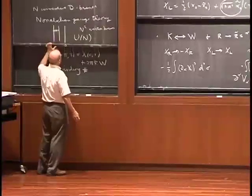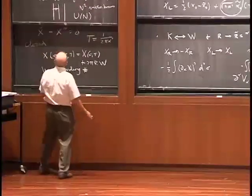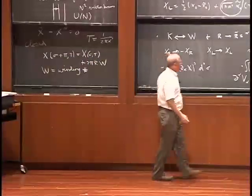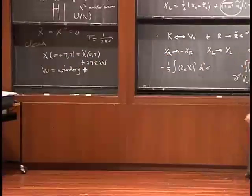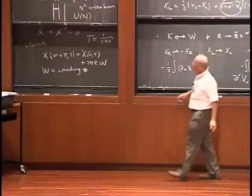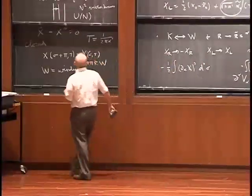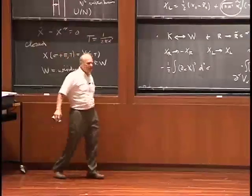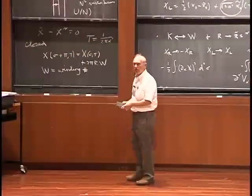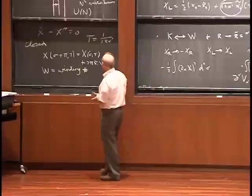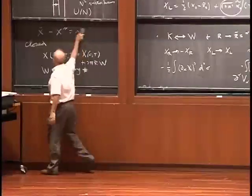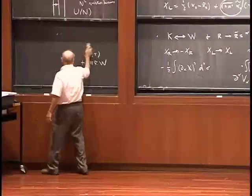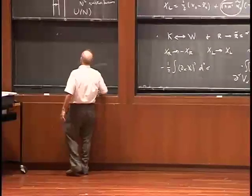When D-branes are coincident, the vector bosons are massless, giving a U(N) gauge theory on the worldvolume. When you pull them apart, you're doing a sort of Higgsing, giving mass to the vector fields. Non-abelian gauge theory is one of the ingredients needed to make contact with the real world. There are generalizations: for unoriented strings, you get an orthogonal or symplectic group rather than U(N).